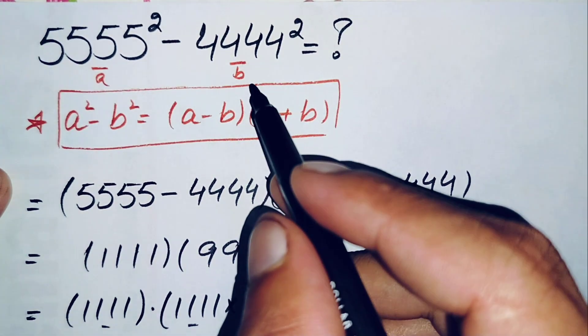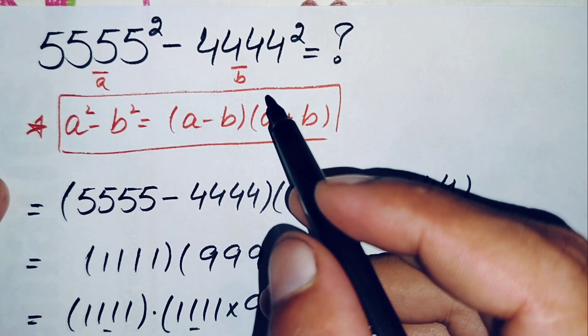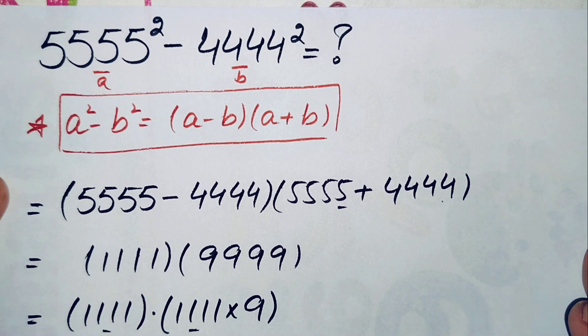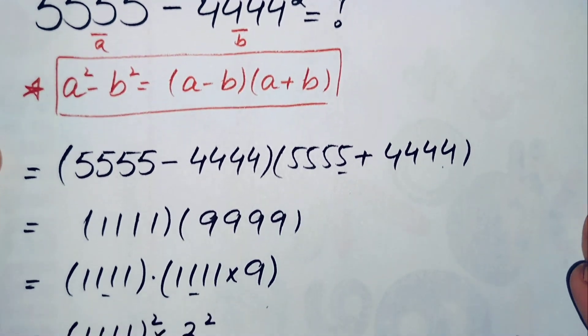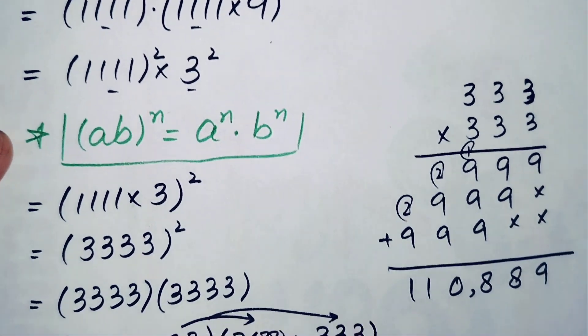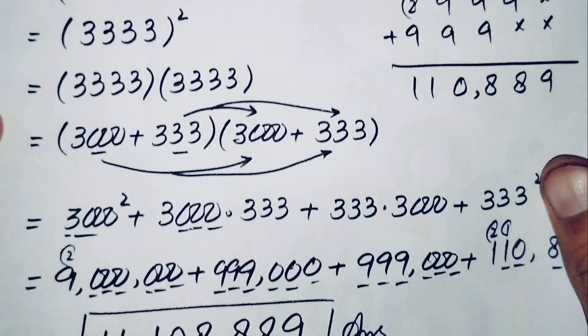So finally, 11,108,889 is our answer and the value of this nice and interesting simplification math problem. If you like this video, don't forget to subscribe to my YouTube channel. Thanks for watching.